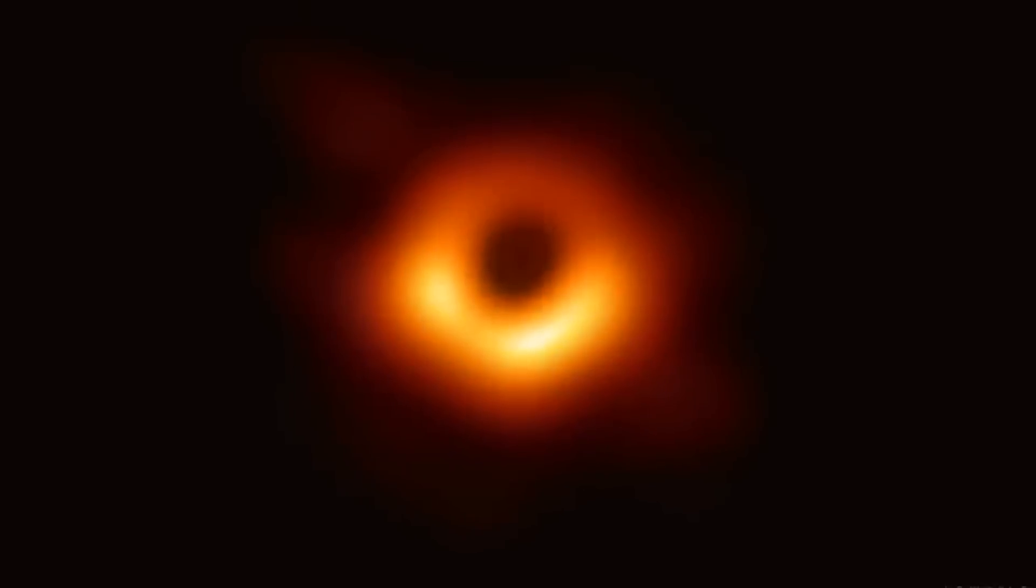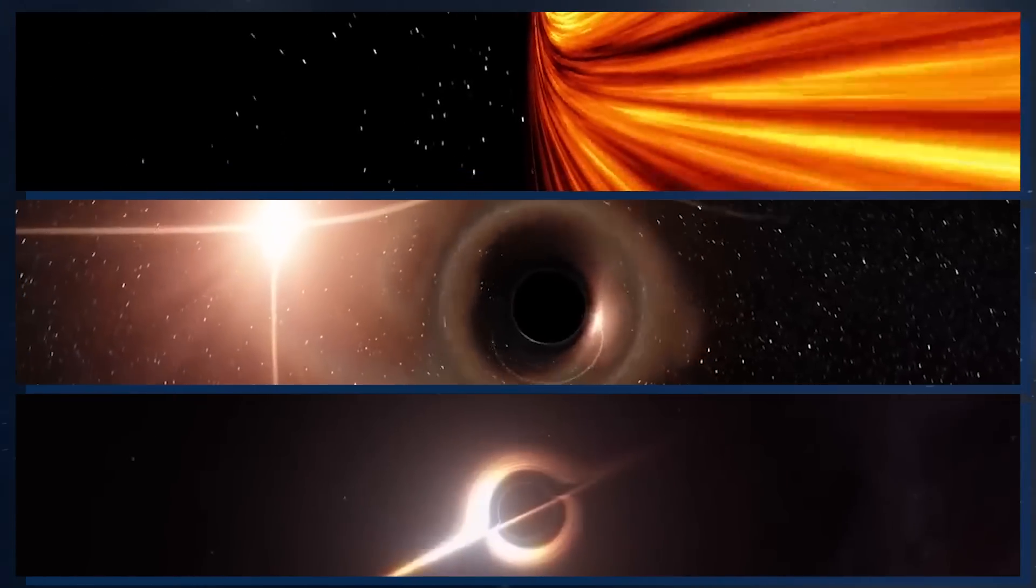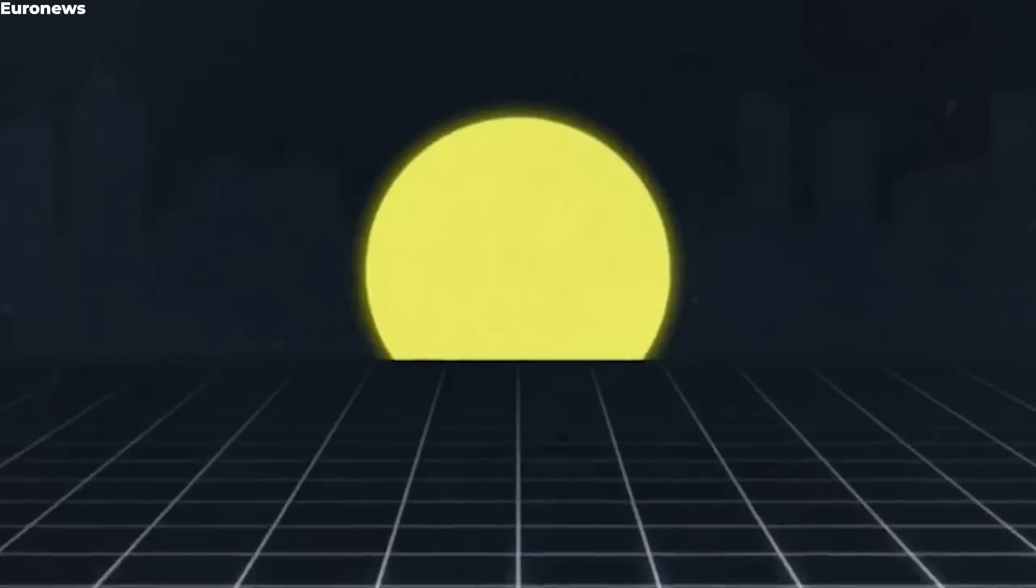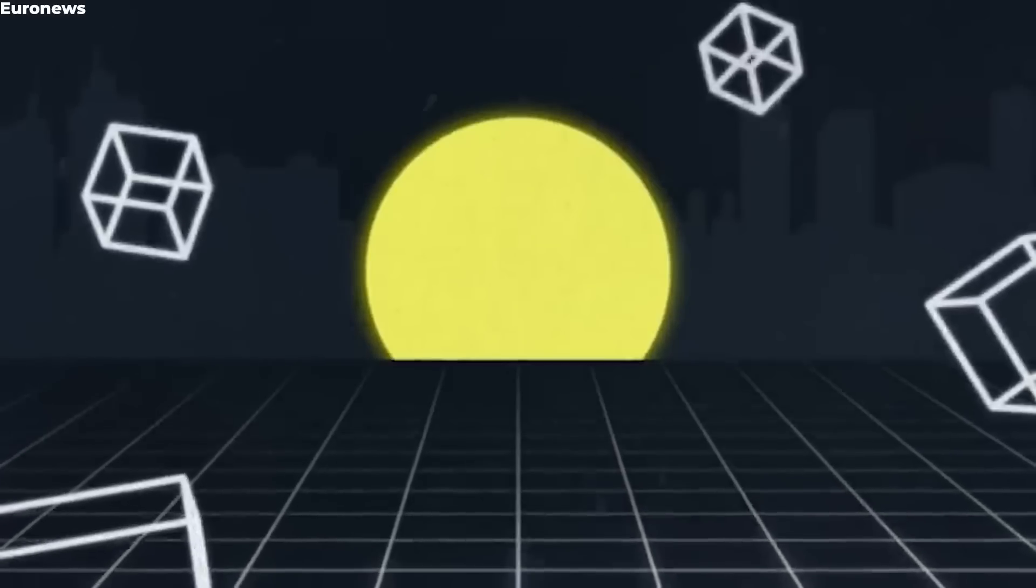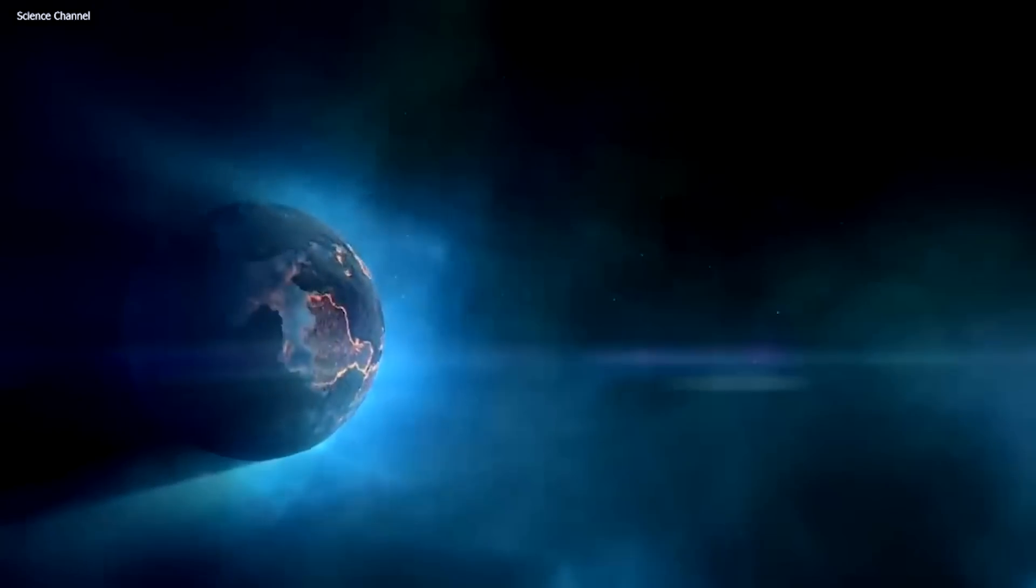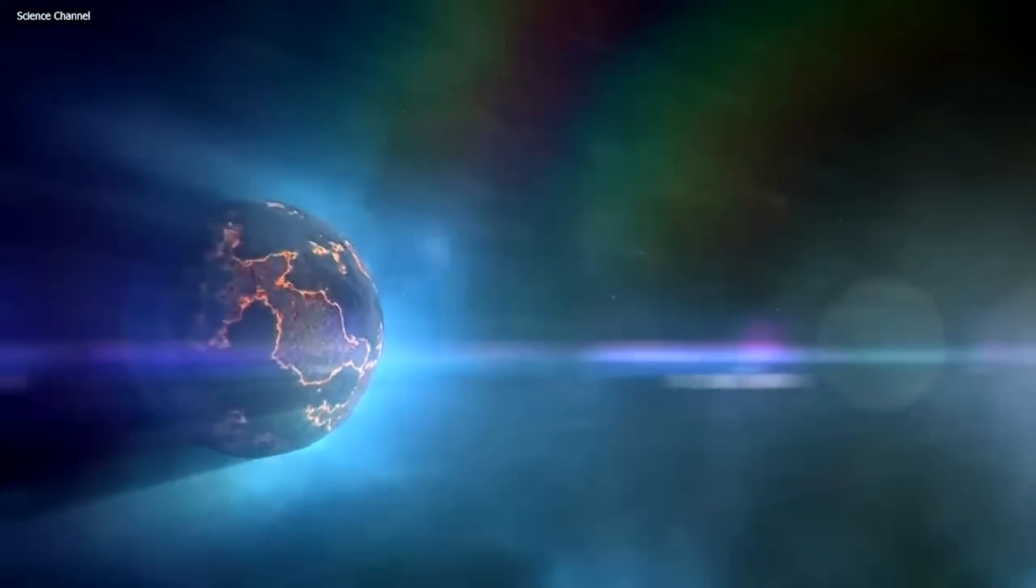Black holes come in all shapes and sizes. Our Sun is too small to become a black hole. Therefore, near the conclusion of its existence, it will likely expand into a red giant, cooking our planet alive.